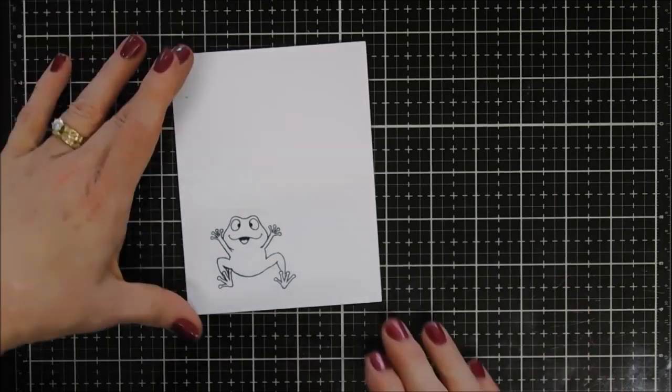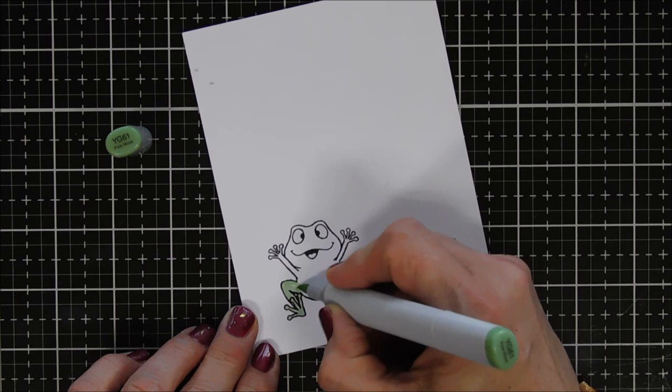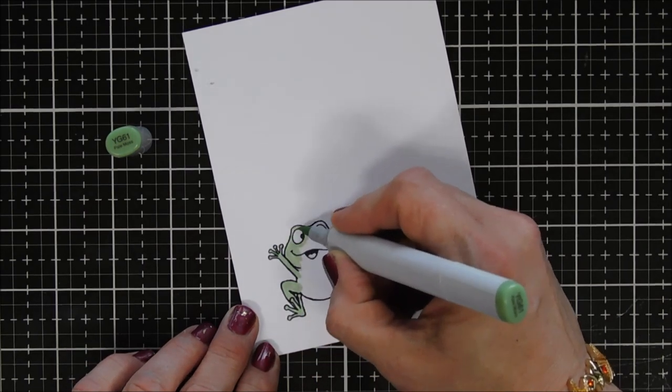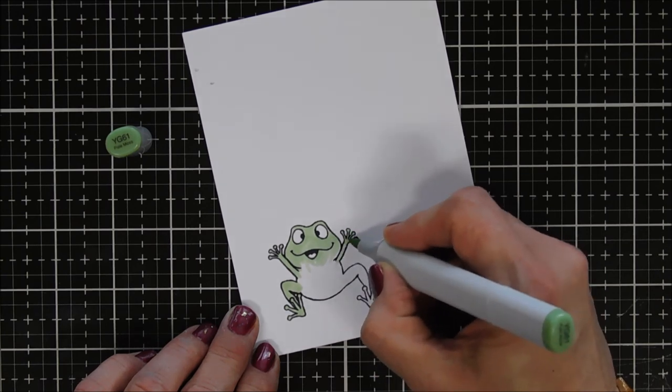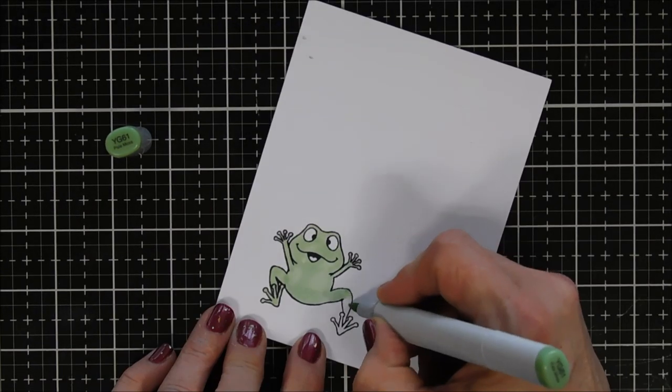So I'm going to zoom in. I stamped my little frog with my Memento ink and now I'm coloring him in with my Copic markers. I'll list the caps out for you guys and I'll play a little bit of music and when I'm done coloring, I will get you back.